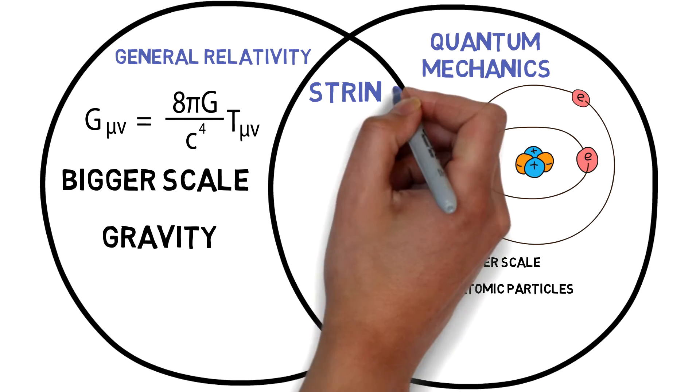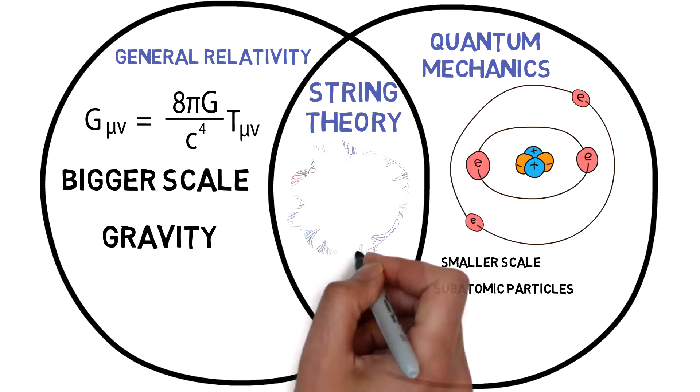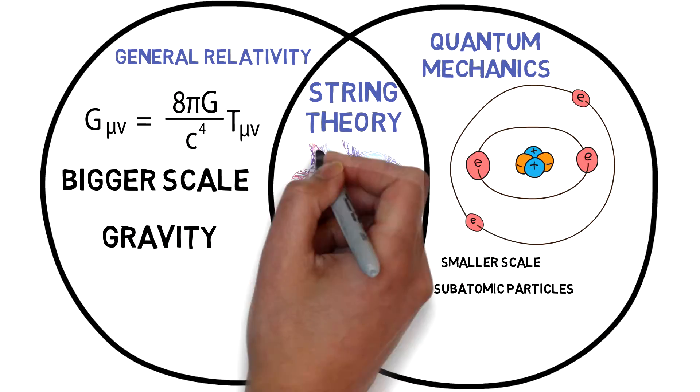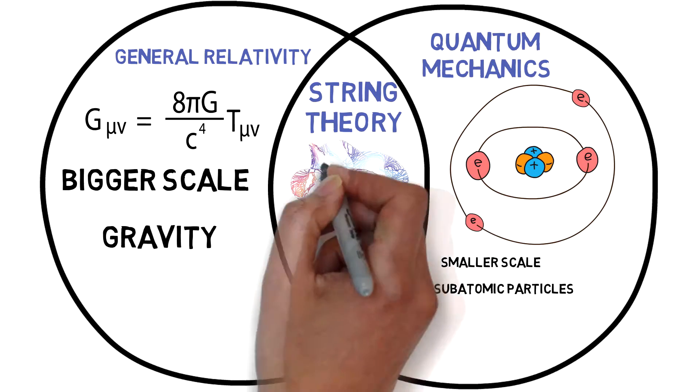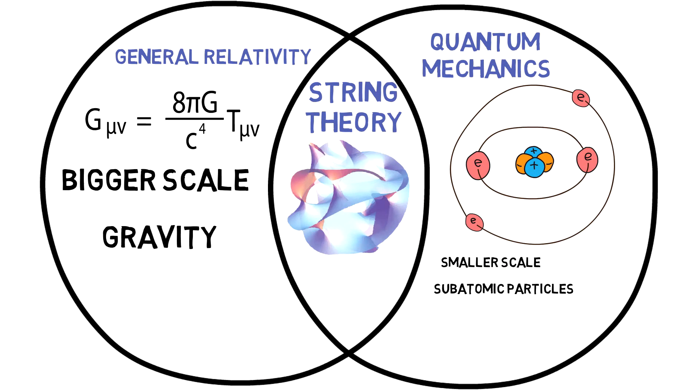This is where string theory comes into play. It is called the theory of everything because it is a unifying theory. It makes quantum mechanics and general relativity compatible with each other, and therefore string theory is able to explain everything under one set of principles and one unifying theory.